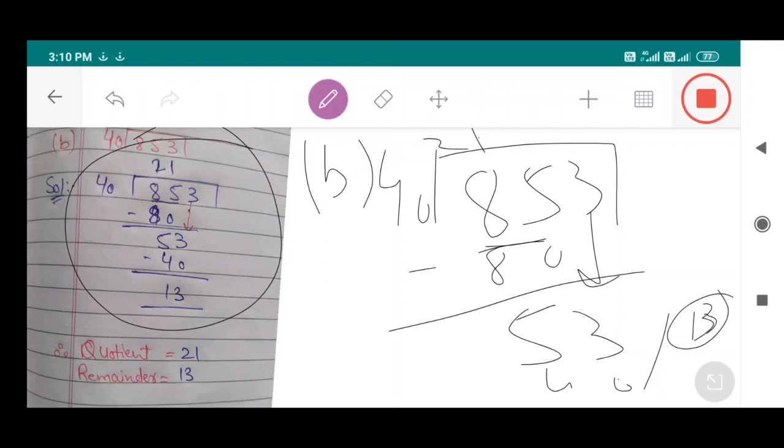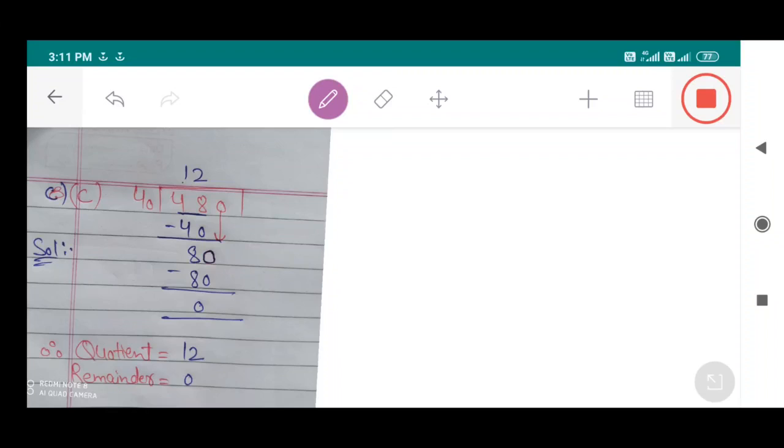40 multiplied by 1 equals 40. 53 minus 40 equals 13. Therefore quotient is 21 and remainder is 13.